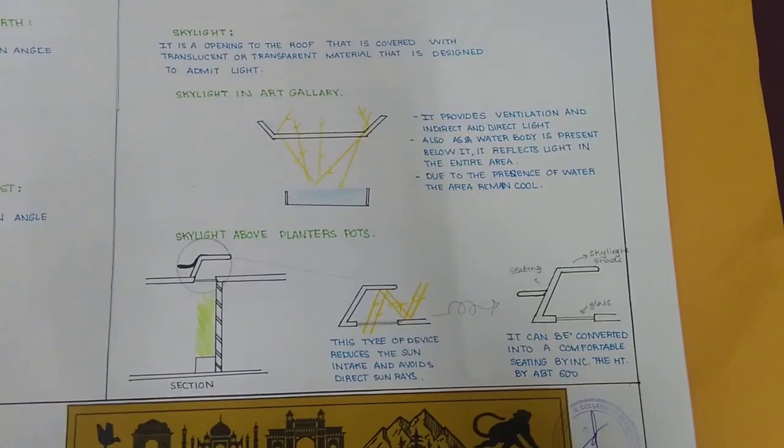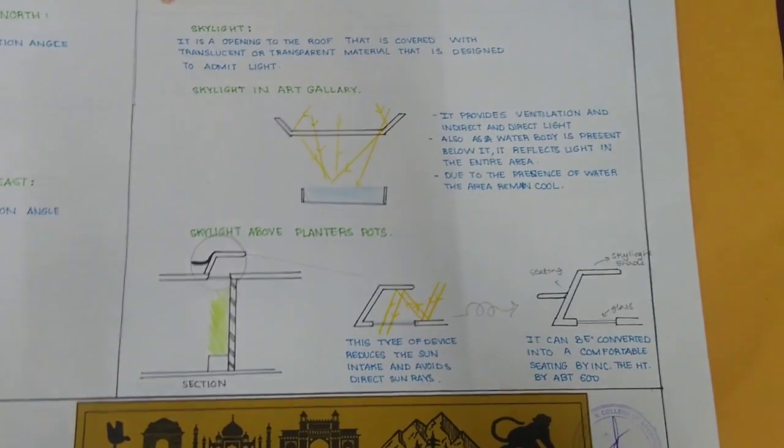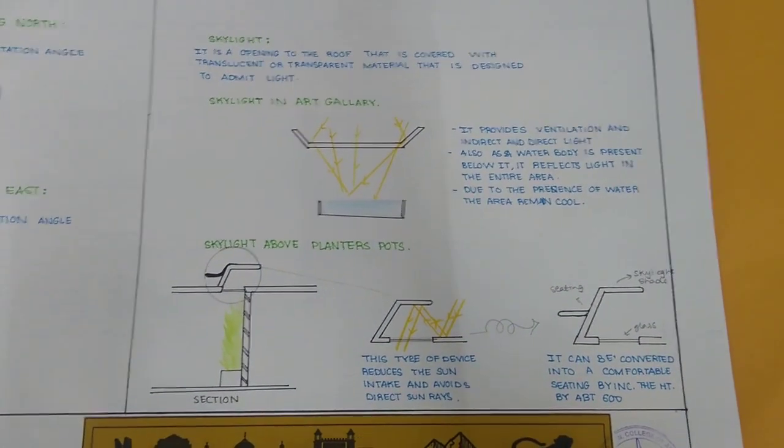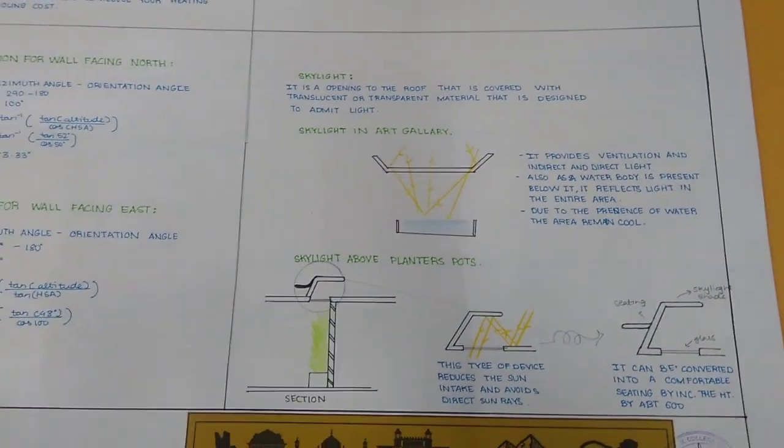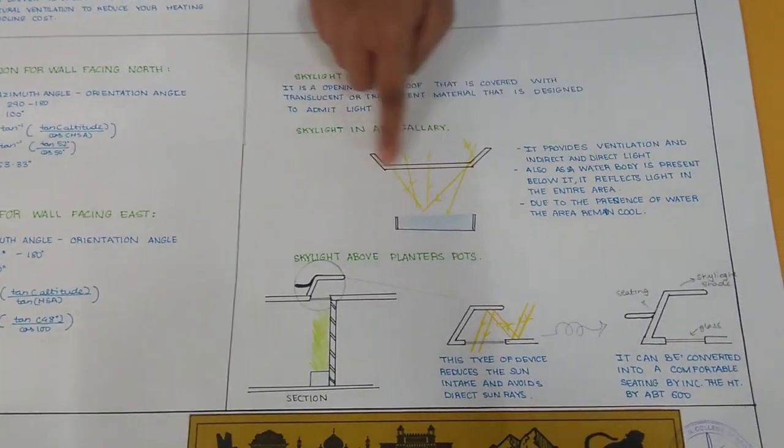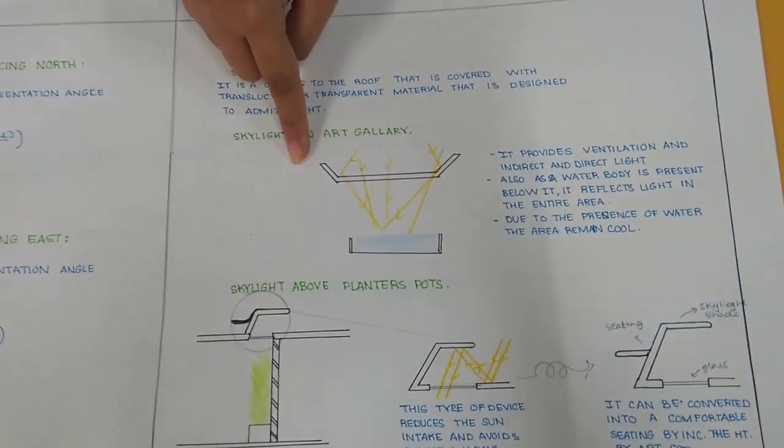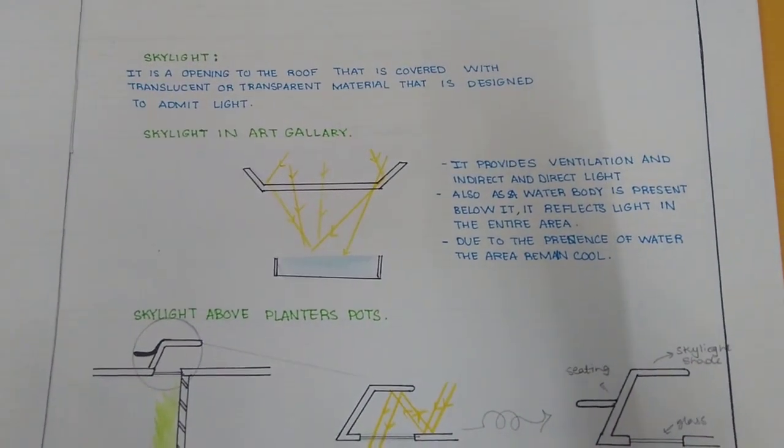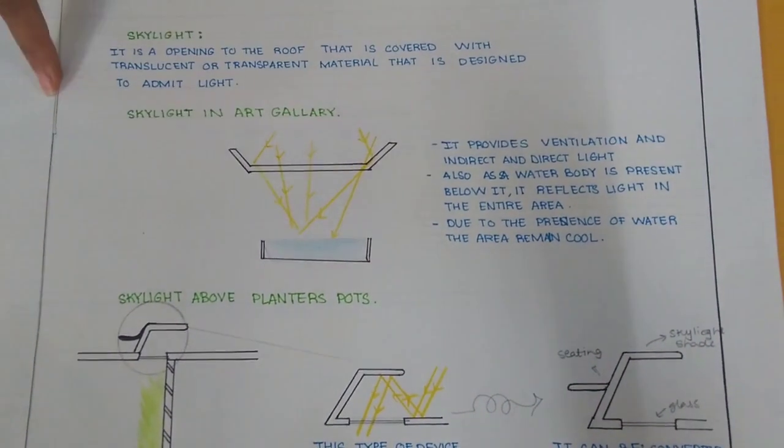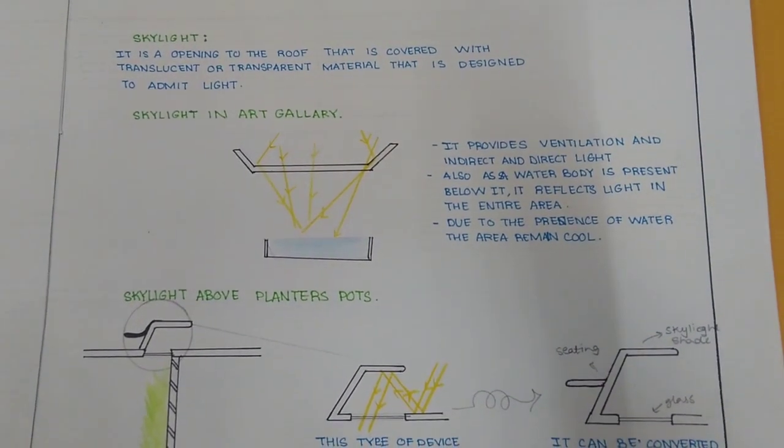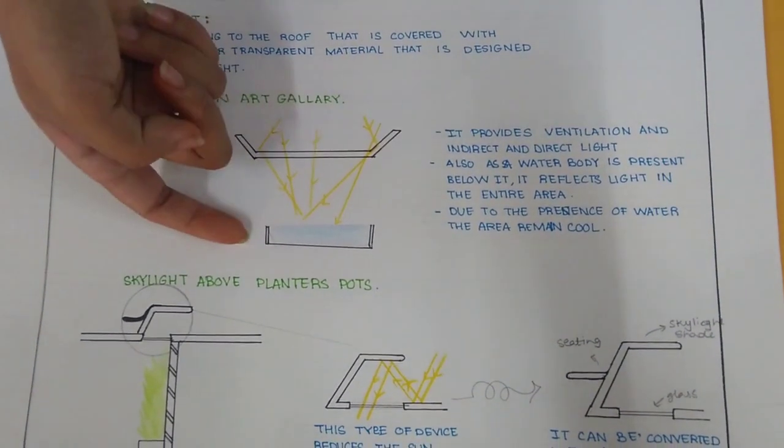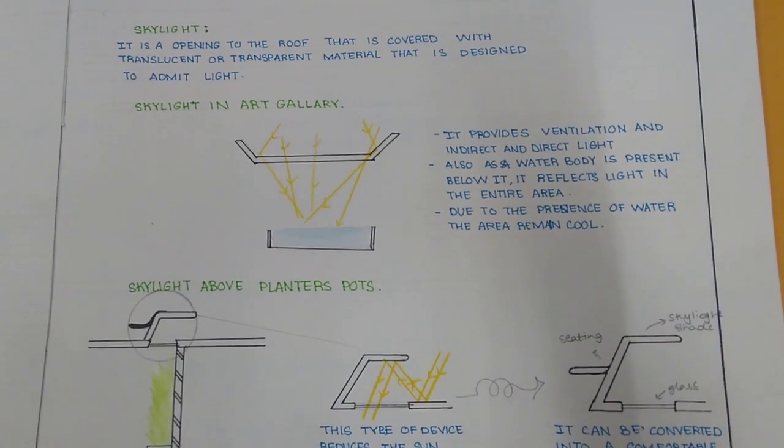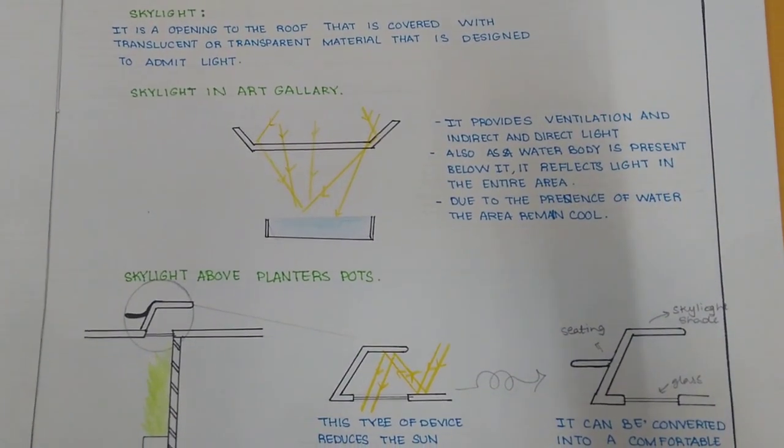Here I have used the skylights for the AV hall and the art gallery. The skylights have been given so that the light gets reflected and goes onto the water body which is below the art gallery and gets reflected. This will even cool the atmosphere, the water body below will cool the atmosphere and reflect a lot of light as well.